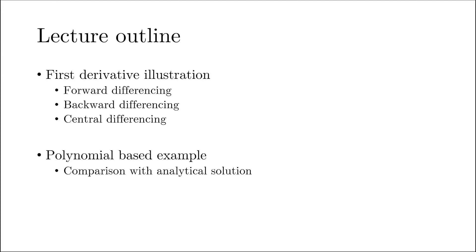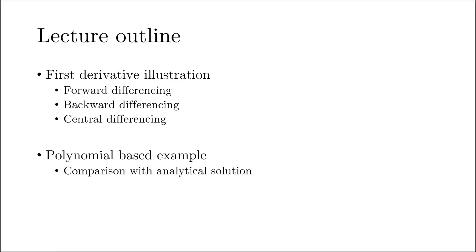Today we are going to dive a little bit deeper into that. We are going to understand how we can use the finite differencing method to evaluate the first derivative. To be specific, we'll talk about three particular schemes: the forward differencing, the backward differencing, and the central differencing. In the second part of this lecture, we'll take the example of a polynomial whose analytical derivative we know, and we'll try to compare our finite differencing results with the analytical solution. So without wasting any further time, let's get started.